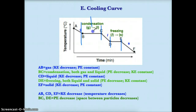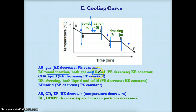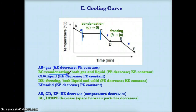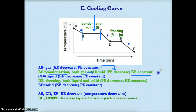BC, the first zero slope or flat line on any cooling curve, is condensation — where you go from a gas to a liquid. Since you're changing phases from gas to liquid, you're decreasing the distance between the particles, so potential energy must decrease. Since this is a flat line with constant temperature, the kinetic energy is constant. In short: BC is condensation, potential energy decreases, and kinetic energy is constant.